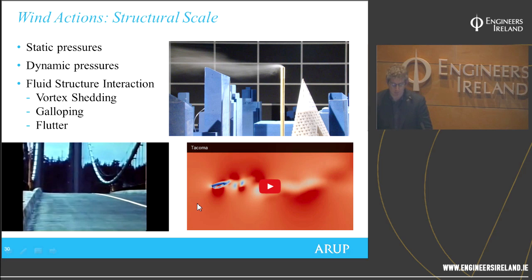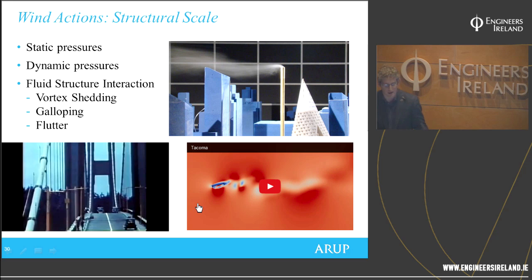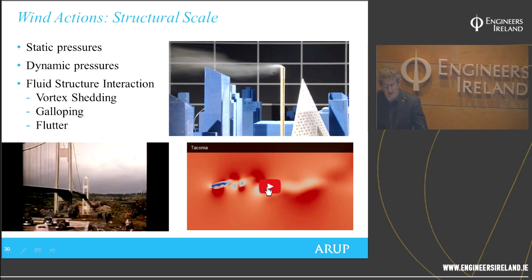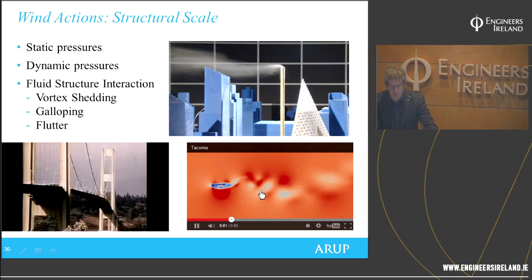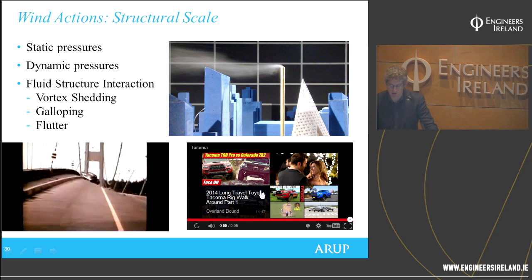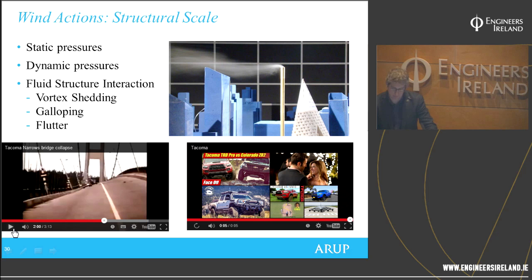The Tacoma Narrows Bridge started to oscillate due to flutter. This phenomenon was discovered using wind tunnel testing, and wind engineering as a field really started with that event — developing what was developed for aerospace and applying it to bridges. With CFD and modern computational power, we're able to replicate much of what was done in wind tunnel testing, and can now look at multiple different design options and optimise.